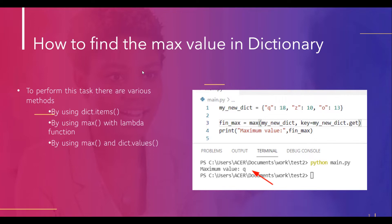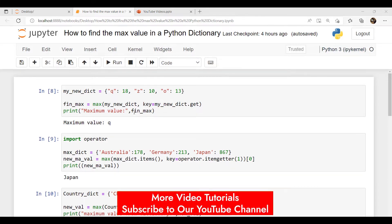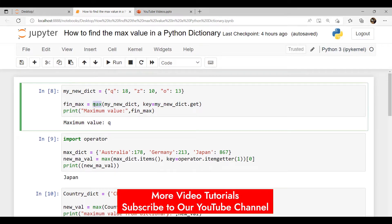First we will discuss how to find the maximum value in a dictionary. To perform this task there are various methods. The first method is dict.items. The second method is max with a lambda function, and the last method is max with dict.values. Now let's take an example and check how to find the max value in a dictionary using all these methods. To obtain the maximum value from a dictionary we can use the built-in max function.